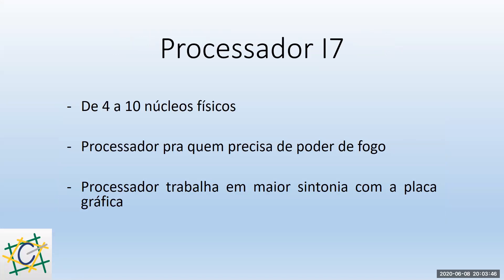Aos poucos a gente vai evoluindo. Antes falávamos só de frequência e núcleos; hoje entendemos a memória cache. Vamos falar agora do i7. O i7 é um processador que vem de 4 a 10 núcleos físicos, fora os núcleos lógicos gerados pelo Hyper-Threading. Já é um processador para quem precisa de poder de fogo: aquela pessoa que joga bastante, faz edição de vídeo, precisa de um computador mais rápido e com desempenho bom.